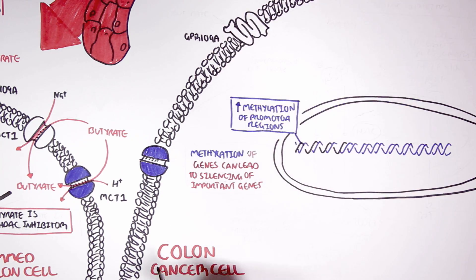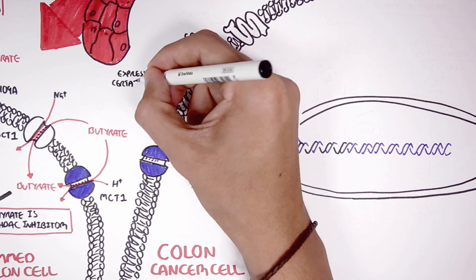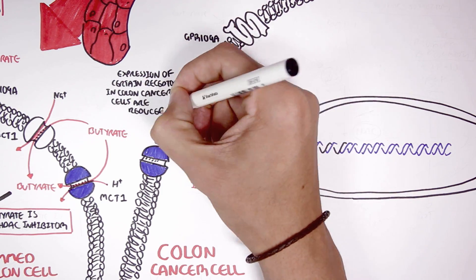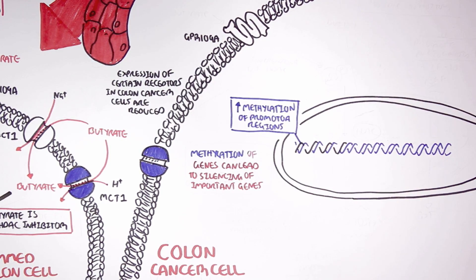To add further to this, the expression of certain receptors on colon cancer cells, such as the receptors for butyrate, are reduced, are underexpressed. And this may be directly or indirectly associated with DNA hypermethylation.